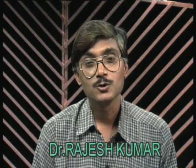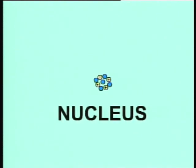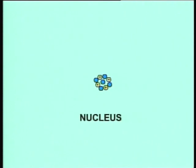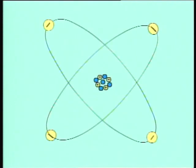In each of these cases, the object becomes electrically charged. The question is: how do these objects become electrically charged? To understand this, we have to recall the structure of the atom. We know that there is a very small center of the atom called the nucleus, which contains protons and neutrons. Protons have a positive charge, but neutrons have no charge.